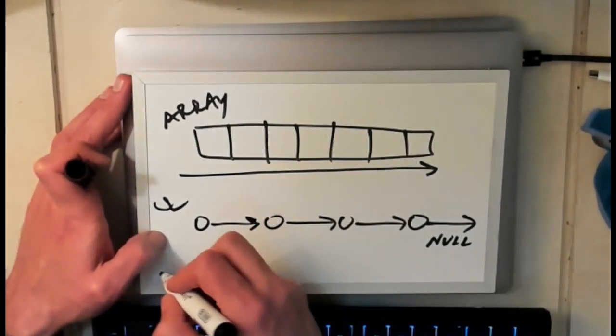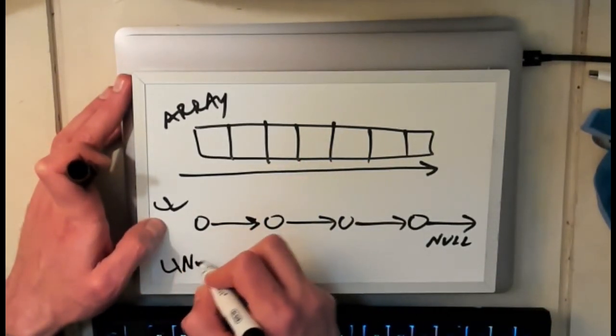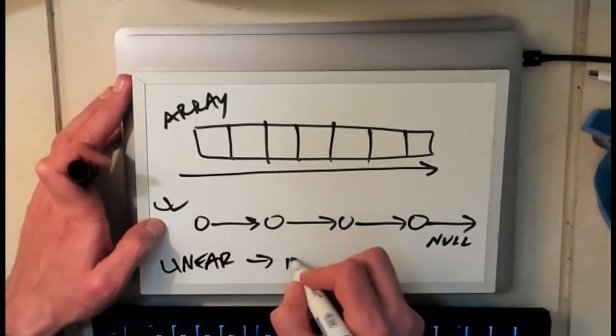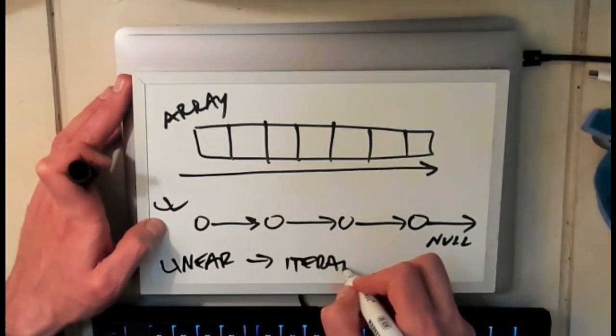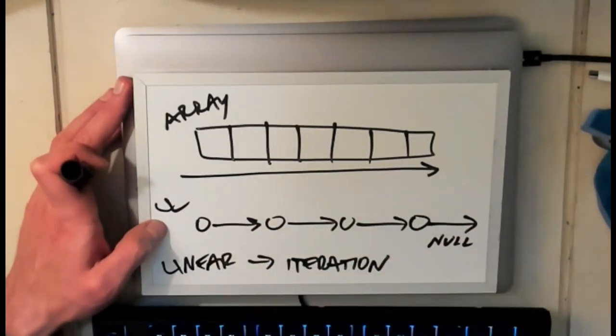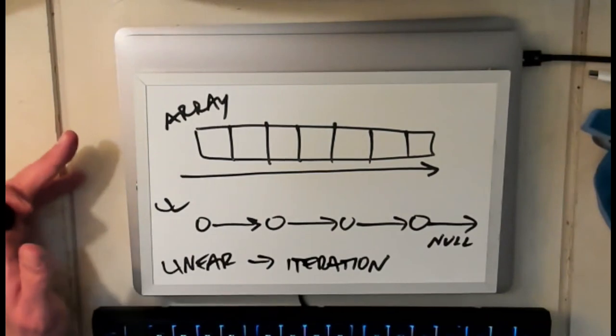Linear data structures like these are a good fit for iteration. In both cases I can write a loop to go through the array, I can write a loop to go through the list, and that's really, I would argue, the right way to do it.